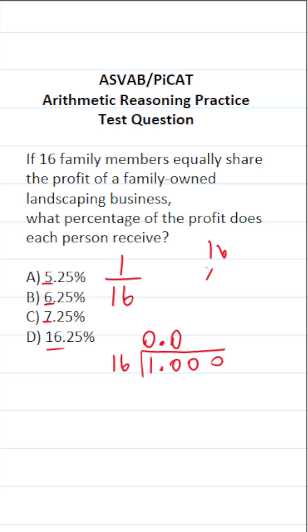So 16 times 6. 6 times 6 is 36, carry a 3. 6 times 1 is 6, plus 3 is 9. So again, 16 times 6 is going to be 96. 96, 100 minus 96 is 4.